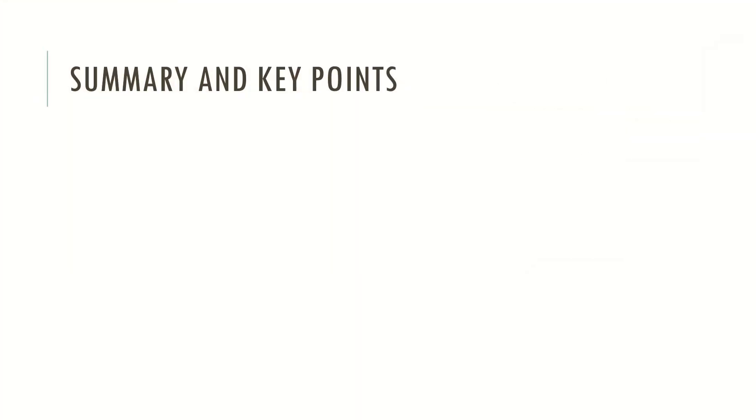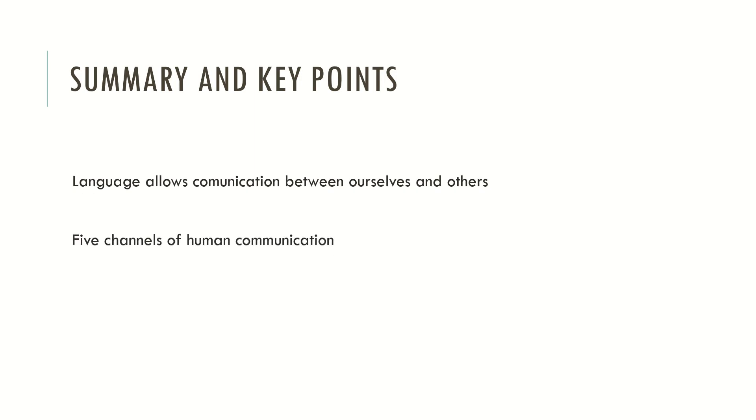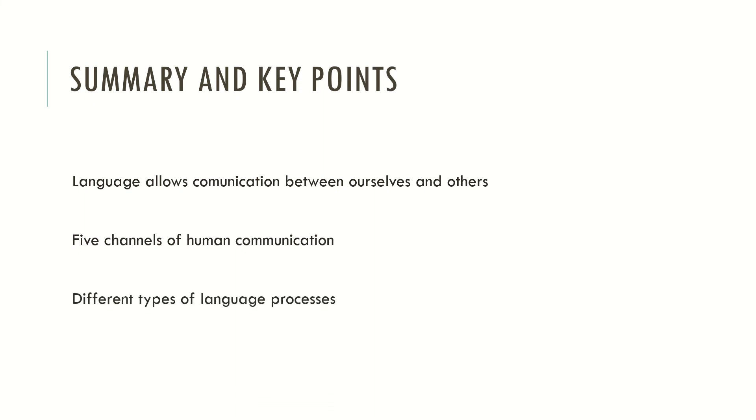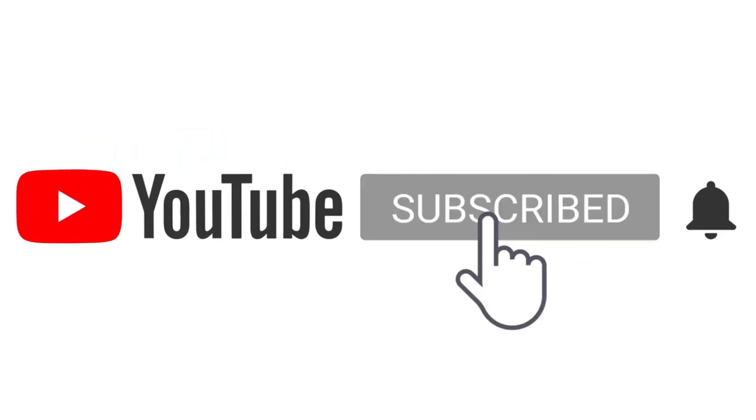Now let's see the summary and key points. Language allows communication between ourselves and others. We looked at five channels of human communication. We saw that there are different types of language processes. And we looked at the basic neuroanatomical structures of language. That's all for today. Don't forget to see the video description regarding today's theme if you want to see the manuals and books that I recommend. If you like what I'm doing, please like, share and subscribe to support the channel. You can also leave a comment below expressing your thoughts. Let me know what you think. Welcome to MindBrainTalks and I hope to see you in the next video!